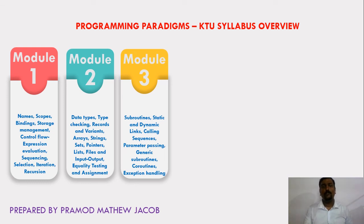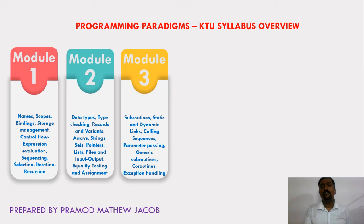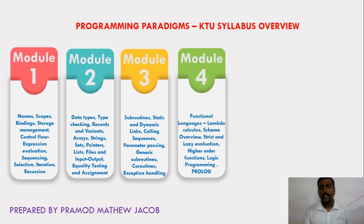In Module 3, we will learn about subroutines or functions and how a function call is performed in the backend using static and dynamic links. We will learn about calling sequences, how to pass parameters using call by value, call by reference, call by name, etc., and we will also learn about generic subroutines, coroutines, and exception handling mechanisms.